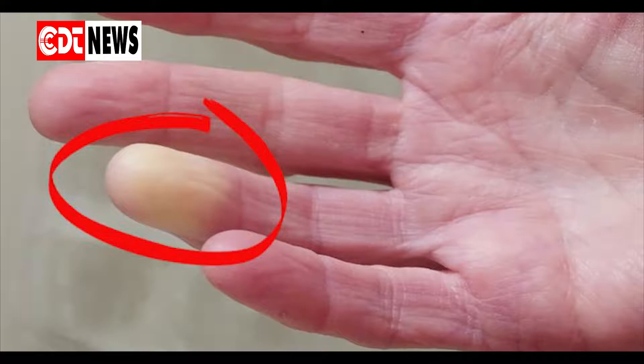Raynaud's impacts the arteries, or blood vessels, that carry oxygenated blood away from your heart to other parts of your body, and in those who suffer with the condition, the arteries narrow, which reduces blood flow to the extremities, particularly the fingers and toes. This occurrence is called vasospasm and it usually develops in brief episodes.